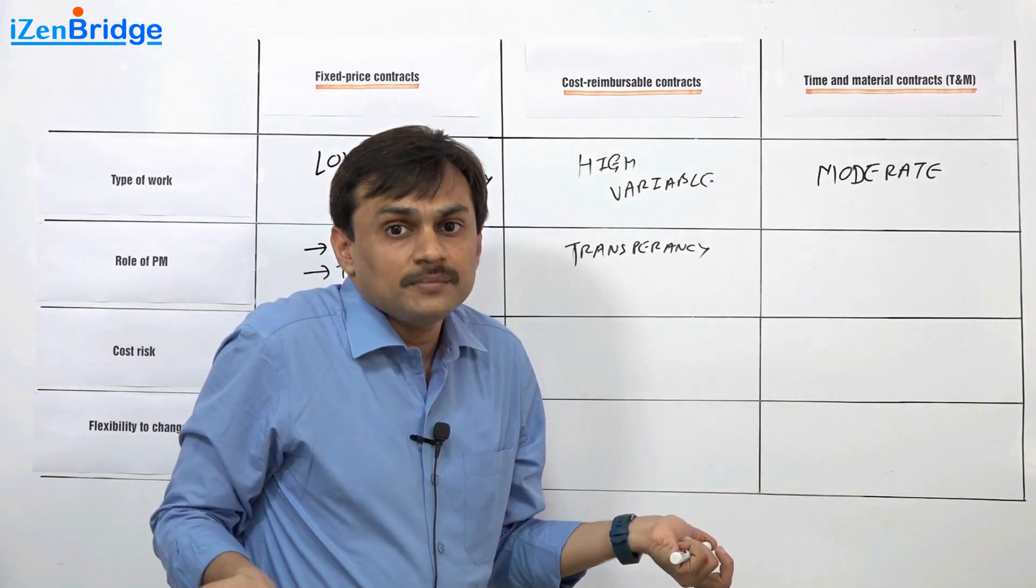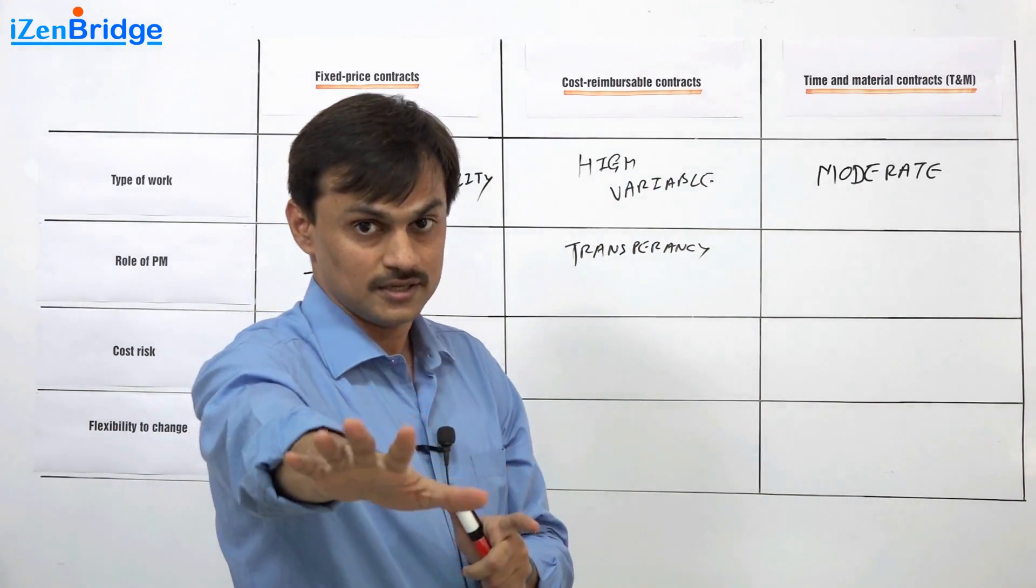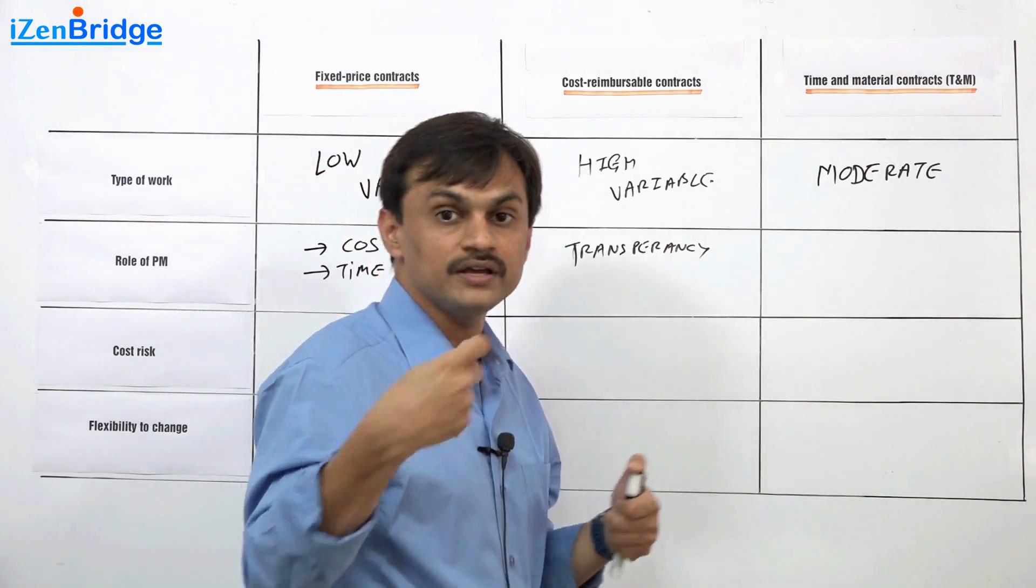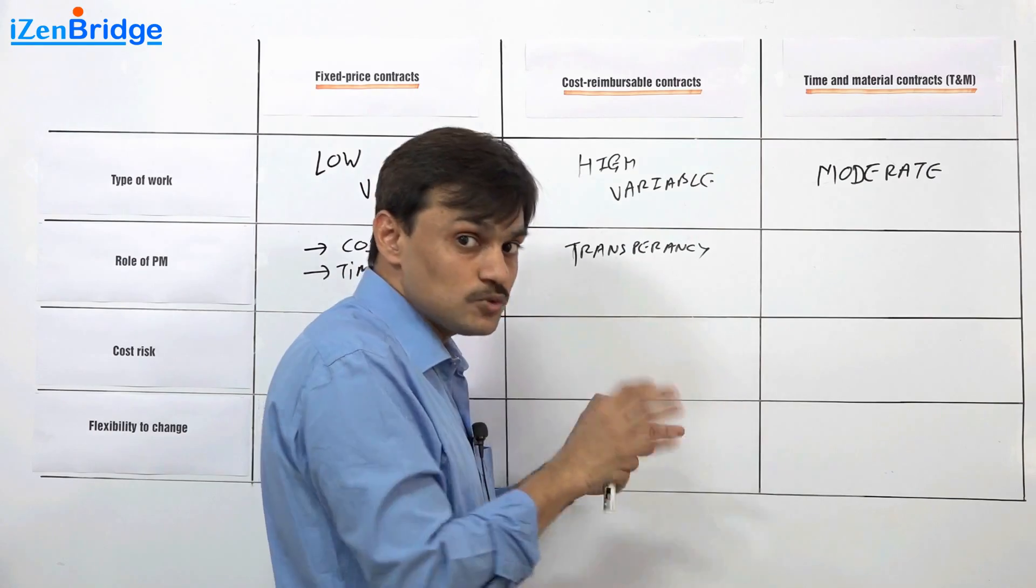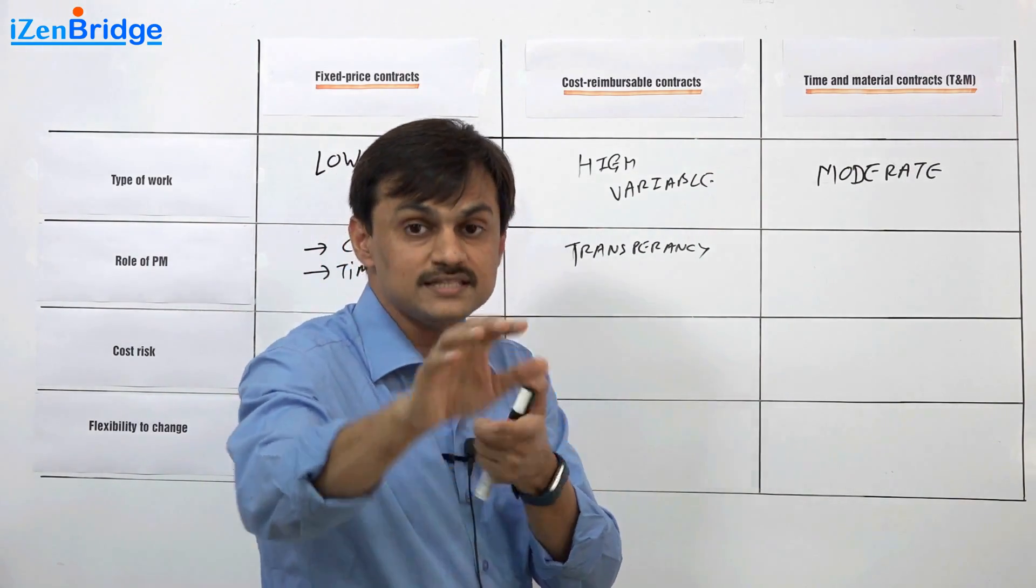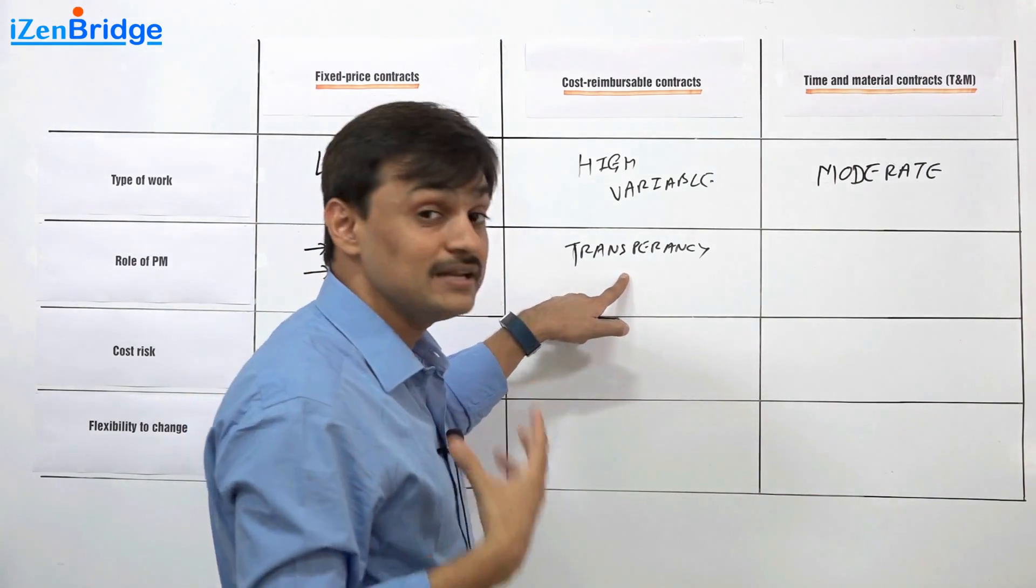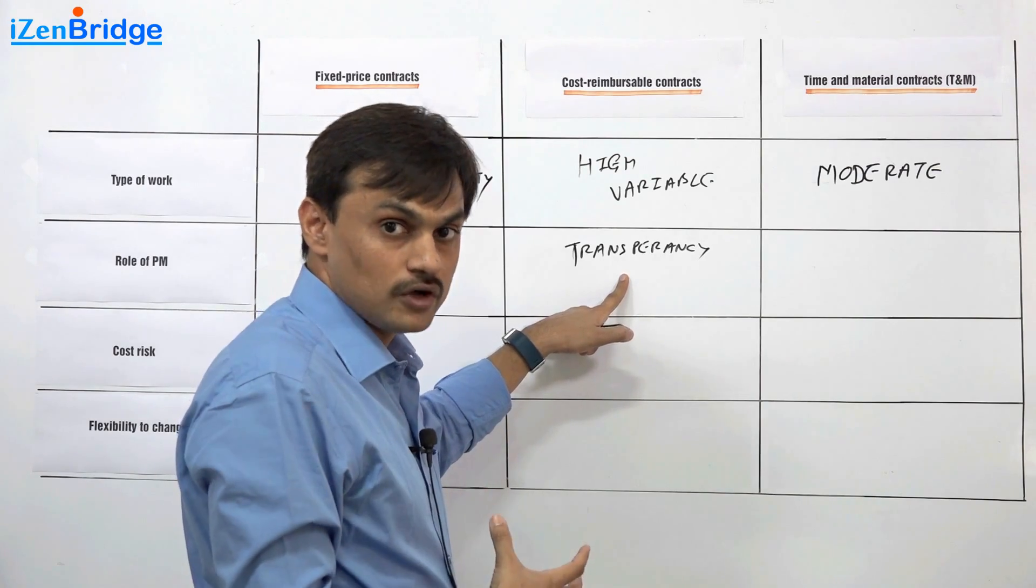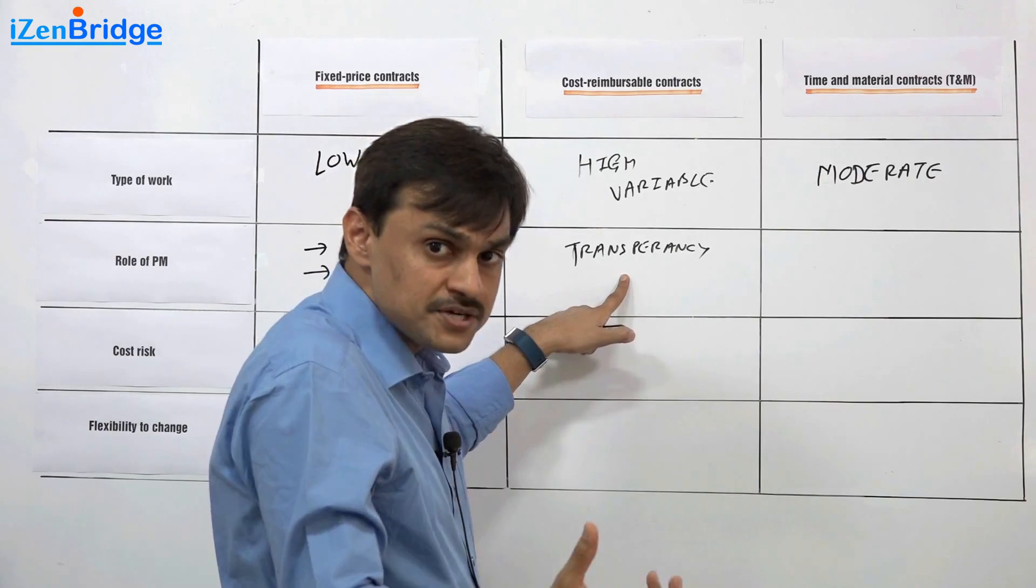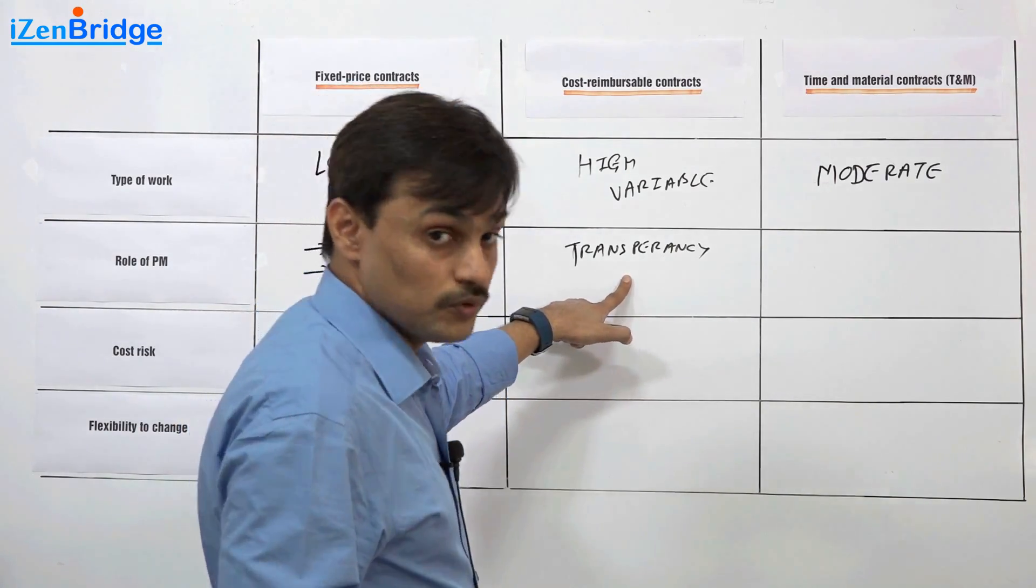If something is taking extra money, project manager has to just ensure the buyer knows about it. That's it. He has not to make a decision. He just needs to project that information to a buyer that yes, this is going beyond cost estimated, this is going like this, and buyer keeps making all the decisions. Buyer is primarily responsible for managing cost and time in case of cost reimbursable. As a seller, you give all the options and you make sure that all the decisions are made after taking an approval from buyer.